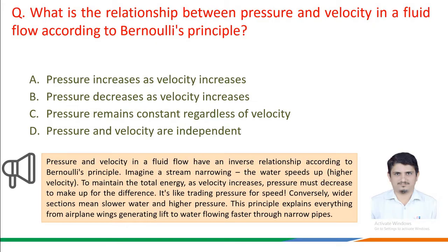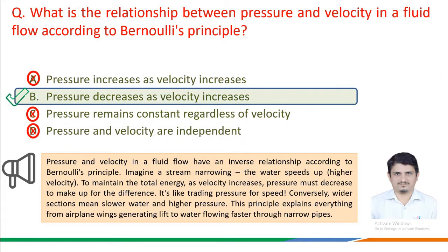Please recall that pressure and velocity in a fluid flow have an inverse relationship according to Bernoulli's principle. Imagine a stream narrowing — the water speeds up, i.e. higher velocity. To maintain the total energy, as velocity increases, pressure must decrease to make up for the difference. It's like trading pressure for speed. Conversely, wider sections mean slower water and higher pressure. This principle explains everything from airplane wings generating lift to water flowing faster through narrow pipes. Therefore, the correct answer is option B: pressure decreases as velocity increases.